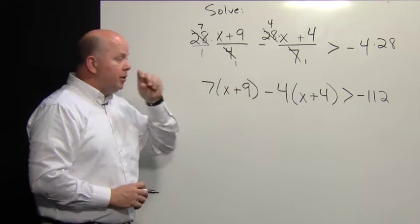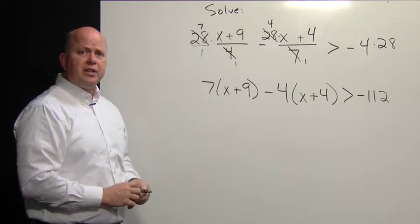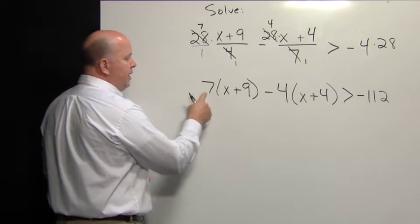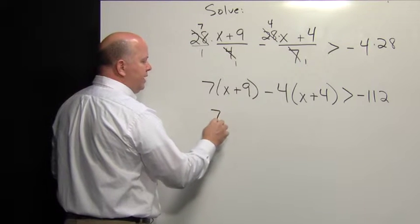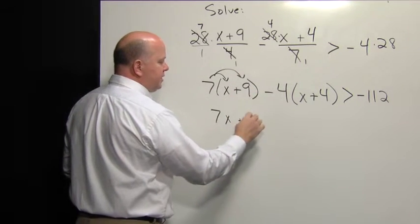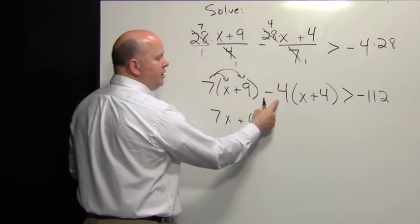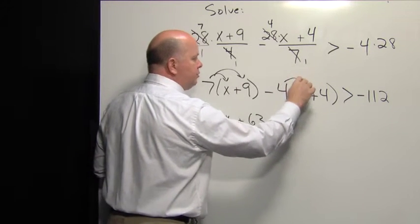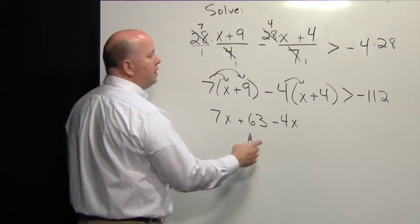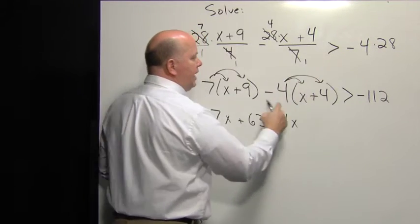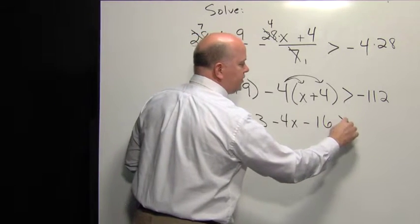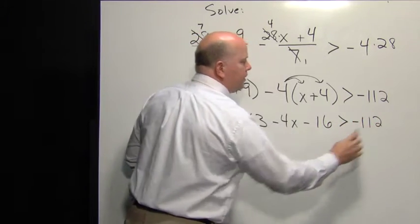Now we can use the distributive property and addition and subtraction properties to solve this inequality. We have 7 times this quantity, so we have 7x, then plus 63. We have negative 4 times x, giving us negative 4x. Then negative 4 times 4, which is 16, and this is greater than negative 112.